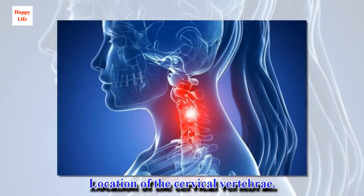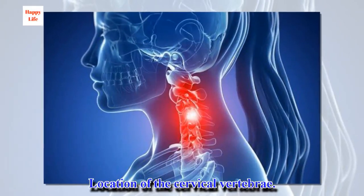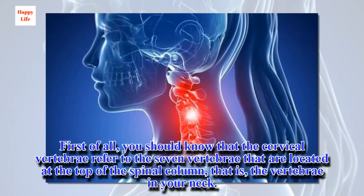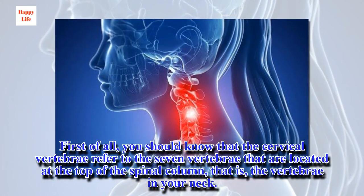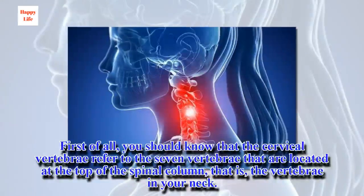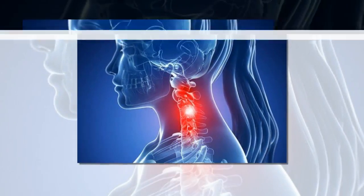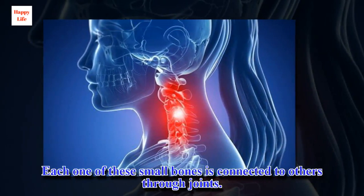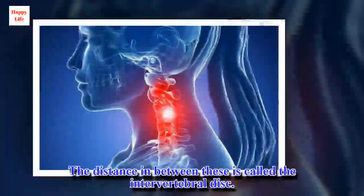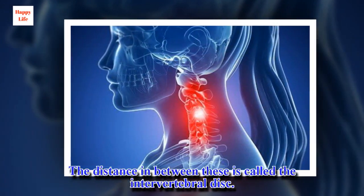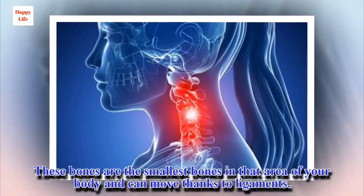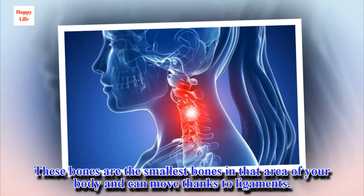Location of the cervical vertebrae. First of all, you should know that the cervical vertebrae refer to the seven vertebrae that are located at the top of the spinal column — that is, the vertebrae in your neck. Each one of these small bones is connected to others through joints. The distance in between these is called the intervertebral disc.